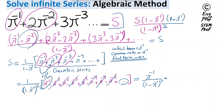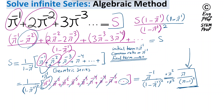We can further simplify by multiplying both numerator and denominator by π squared, which gives us π divided by (π minus 1) squared. So the result of this algebraic method is that this infinite series converges, and the closed-form formula for its value is π over (π minus 1) squared. This relied on a few algebraic tricks, transforming the series into a geometric series and then using a telescoping approach where consecutive terms cancel.